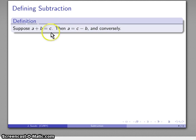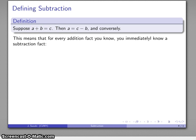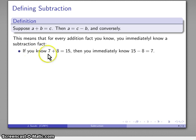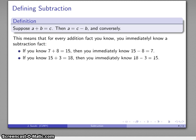Well, this means that every addition fact translates into a subtraction fact immediately. So if I know that 7 plus 8 is equal to 15, I also know that 15 minus 8 is equal to 7. Or if I know 15 plus 3 is equal to 18, I immediately know 18 minus 3 is equal to 15.